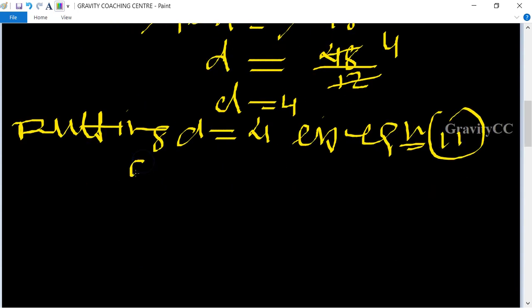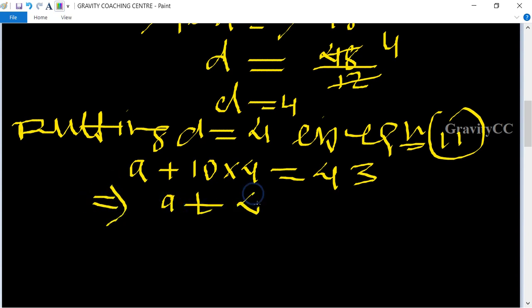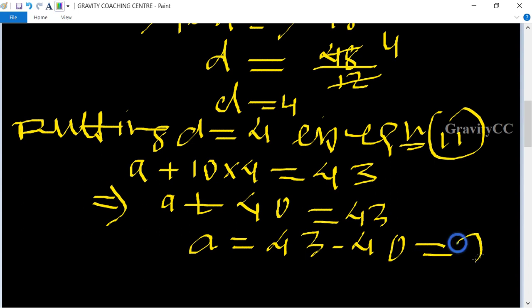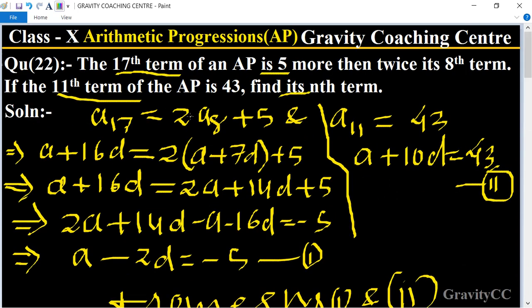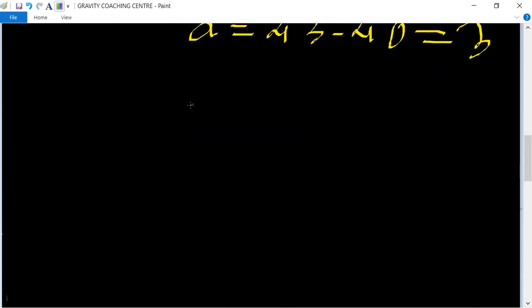The second equation is a + 10d, so 10 times 4 equals 43. So a + 40 = 43, therefore a = 43 - 40 = 3. Now to find its nth term.